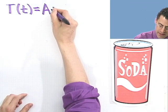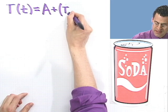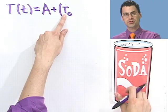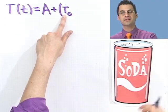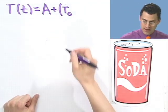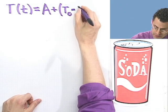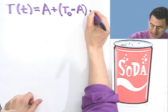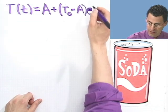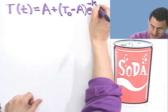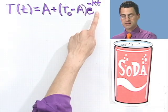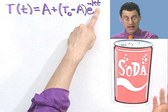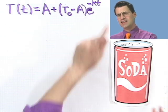And then you add T sub 0, which is the initial temperature of the object that you're putting in to this environment of constant temperature. And subtract off that constant temperature of the environment. And then you have E raised to the power minus KT, where T is the time, again, in minutes. And K is some constant.